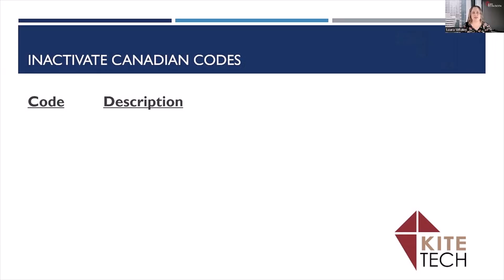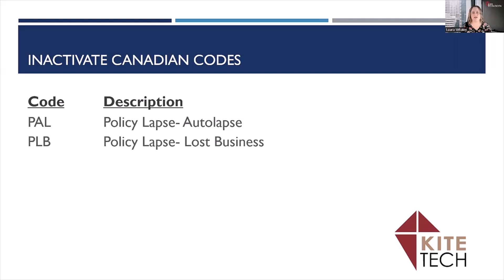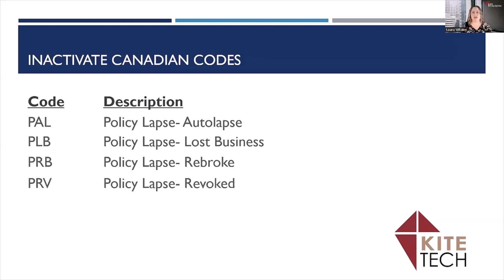The first thing your agency wants to do is look for those Canadian codes and then inactivate them if you do not have Canadian business. These codes include PAL, PLB, PRB, and PRV. These are all Canadian codes and can be inactivated in your instance of EPIC.